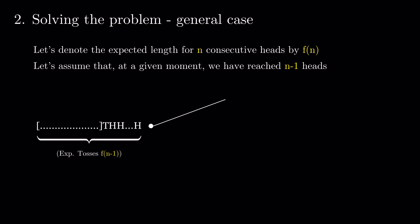With 50% probability, we get tails and the game resets. In this case, we had f(n-1) plus 1 tosses until now, and we expect to need another f(n) tosses to get our n consecutive heads.